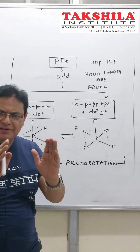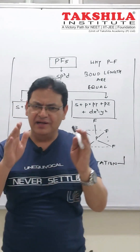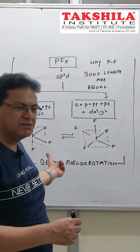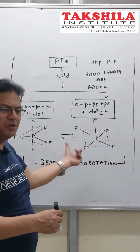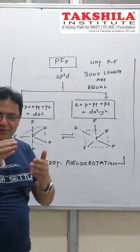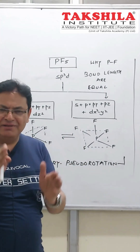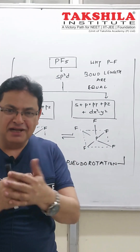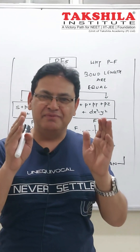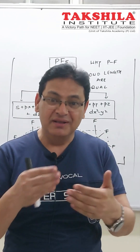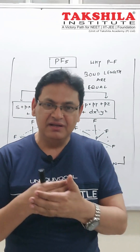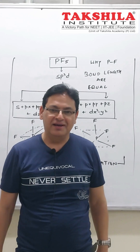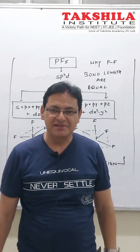Whichever d orbital is involved decides the final geometry of the compound. In this case, we find two geometries which are in dynamic equilibrium with each other, and therefore the phosphorus-fluorine bond lengths are found to be equal. This fascinating phenomenon is known as pseudo rotation.